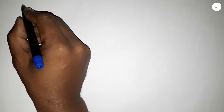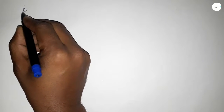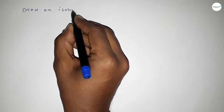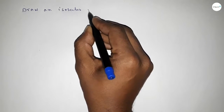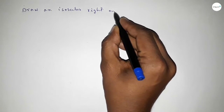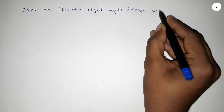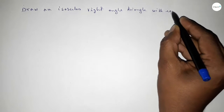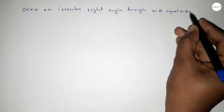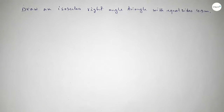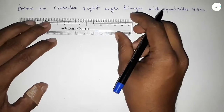Hi everyone, welcome to Essay Share Classes. Today in this video we have to draw an isosceles right angle triangle with two equal sides of 4.5 centimeters. So let's start constructing an isosceles right angle triangle.